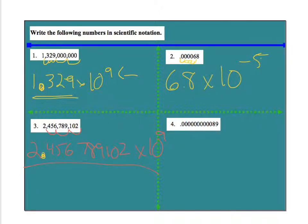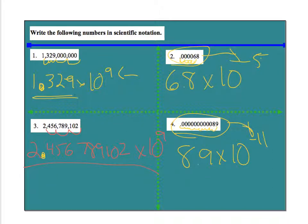Now number 4, I'm moving 1, 2, 3, 4, 5, 6, 7, 8, 9, 10, 11. So that's going to be 8.9 times 10 to the negative 11. Notice, little numbers mean negative exponents. So little numbers mean negative exponents.